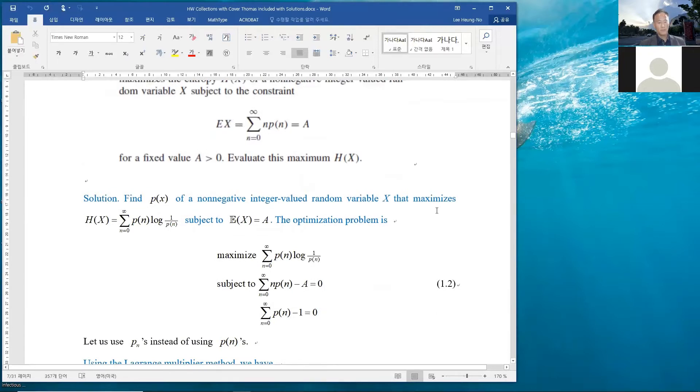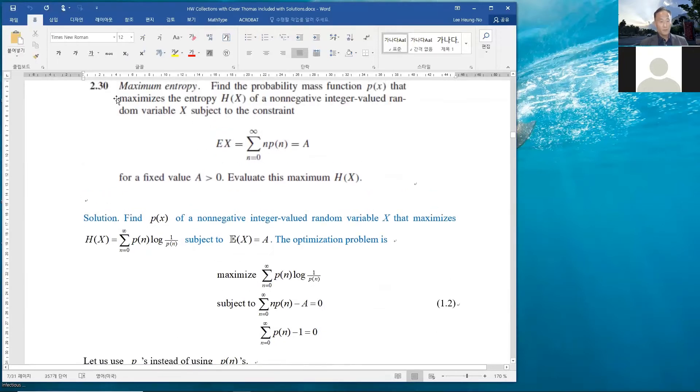And here is a problem of 2.30, which is about maximum entropy. Find the probability mass function px that maximizes the entropy hx of a non-negative integer valued random variable x subject to the constraint, where expectation of x is equal to a, where a is a fixed number greater than 0. And then once you have figured out what px is, then you can obtain the maximum entropy.